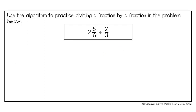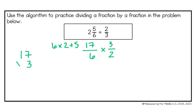I have 2 and 5 sixths divided by 2 thirds. We can only divide a fraction by a fraction, so I need to turn my mixed number into an improper fraction. I take my denominator and multiply it by my whole number, then add the numerator. 6 times 2 is 12, plus 5 is 17, so my new fraction is 17 sixths. Then I change my division symbol, flip my second fraction, and multiply. 17 times 3 is 51, and 6 times 2 is 12.